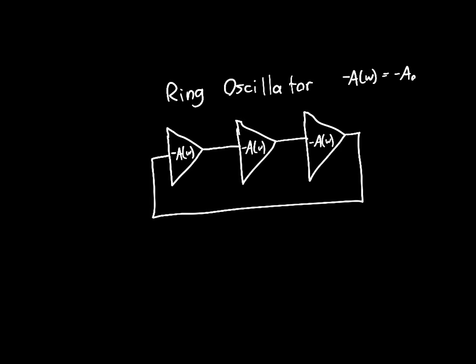At DC, if we have some input noise that increases a node's voltage, the negative amplifier decreases the next node's voltage, then increases, then decreases. Since this is shorted back to our original amplifier, it's going to decrease the noise voltage. So essentially we have a negative feedback amplifier at DC — the amplifier isn't unstable at DC, which is nice. We want it to oscillate at some frequency, so we need the negative feedback to become positive feedback at only one specific frequency, omega.